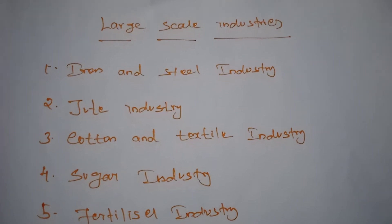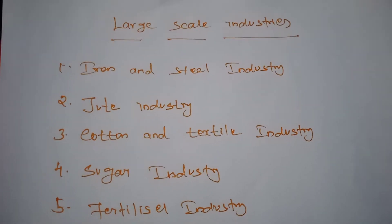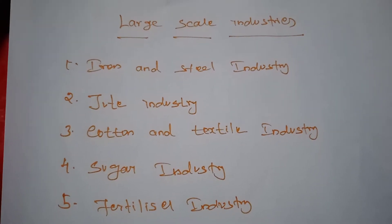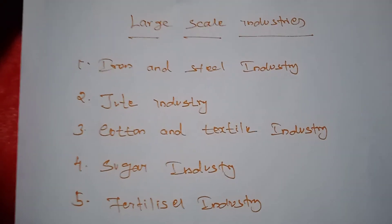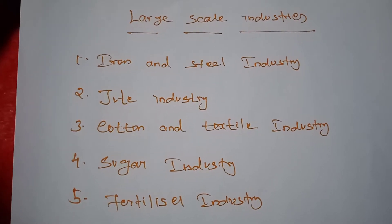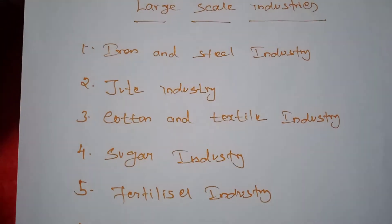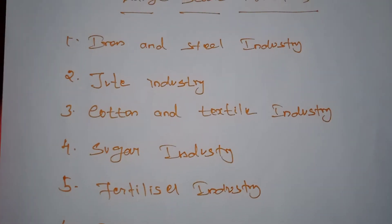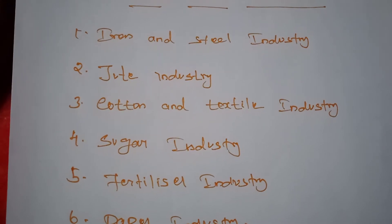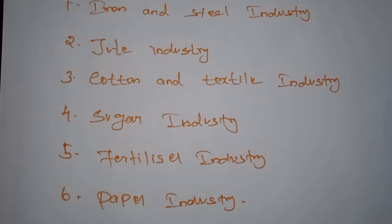The first large-scale industries in our nation include iron and steel. The first steel industry was at Kulti, located in West Bengal. The first large-scale steel plant, TISCO, is located at Jamshedpur. The first public sector unit was the Raza Iron and Steel Works at Bhadravati. All these industries are managed by SAIL — the Steel Authority of India Limited — which was established in 1974.